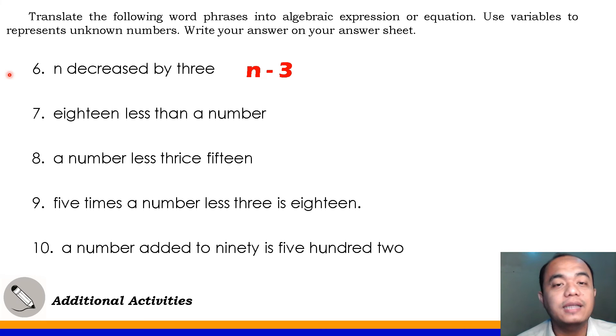Number 7, 18 less than a number. Very good, that's N minus 18. Next, number 8, a number less thrice 15. Very good, N minus 3 times 15. Don't be confused, class. There's no 'than' word here. The word used here is less. If we use 'less than,' so it means that N is what will be subtracted from 18. But here, since there's no 'than' used, just 'less,' so the N here will stand as our minuend, and this is our subtrahend, your thrice 15.